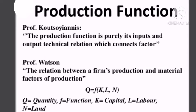Where Q is the quantity of output produced during a particular period, and K, L, N, etc. are the quantities of factors like capital, labour, and land used in production. So the production function common equation is Q = F(K, L, N).